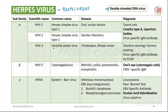Human herpesvirus 3 is the varicella-zoster virus. It causes chickenpox and herpes zoster. Chickenpox follows primary infection in a non-immune individual, whereas herpes zoster is the reactivation of the latent virus when immunity falls to an ineffective level. Contact with either chickenpox or zoster may lead only to chickenpox, but not herpes zoster.